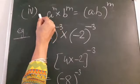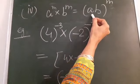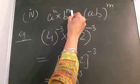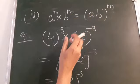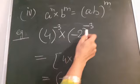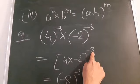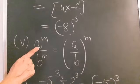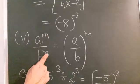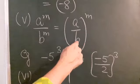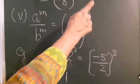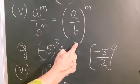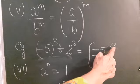The fourth law: a raised to power m into b raised to power m equals (a into b) raised to power m — when powers are the same, we multiply the bases and keep the same power. For example, 4 raised to power minus 3 into (minus 2) raised to power minus 3: the powers are the same, so write power minus 3 and multiply the bases: 4 times minus 2 gives minus 8. Answer: minus 8 raised to power minus 3. The fifth law: a raised to power m divided by b raised to power m equals (a upon b) raised to power m — same power, divide the bases. For example, (minus 5) raised to power 3 divided by 2 raised to power 3 gives (minus 5 upon 2) raised to power 3.